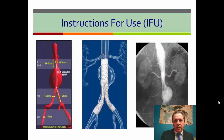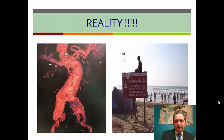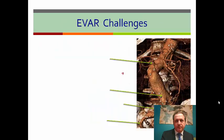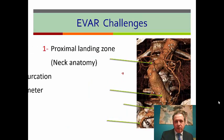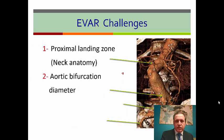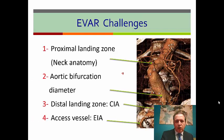All of us love to have a case where the EVAR falls inside the IFU, but real life is different. The EVAR challenges could be at four levels: at the neck, at the aortic bifurcation, at the distal landing zone — the common iliac artery bifurcation — or at the access vessel, which is the external iliac artery.